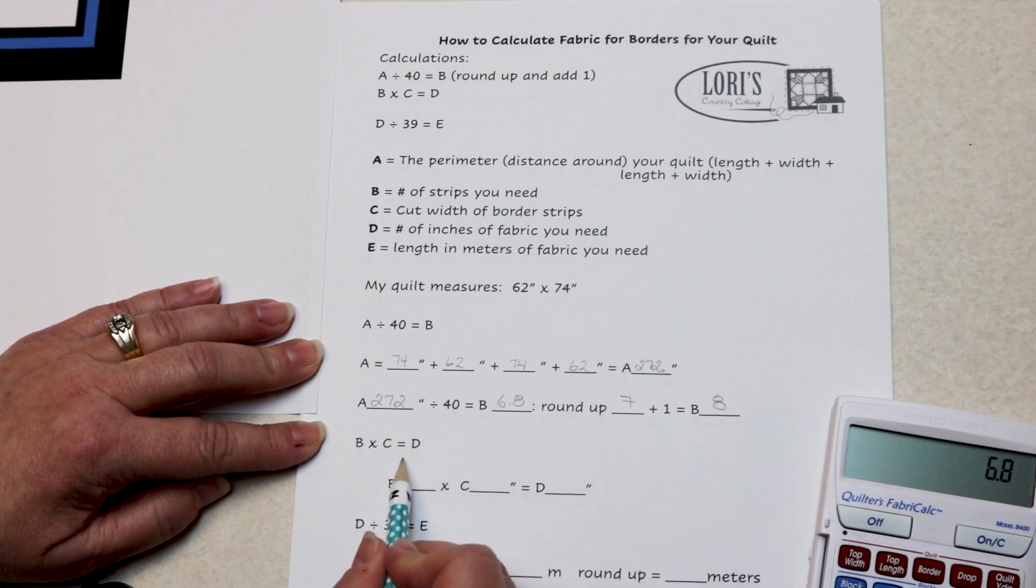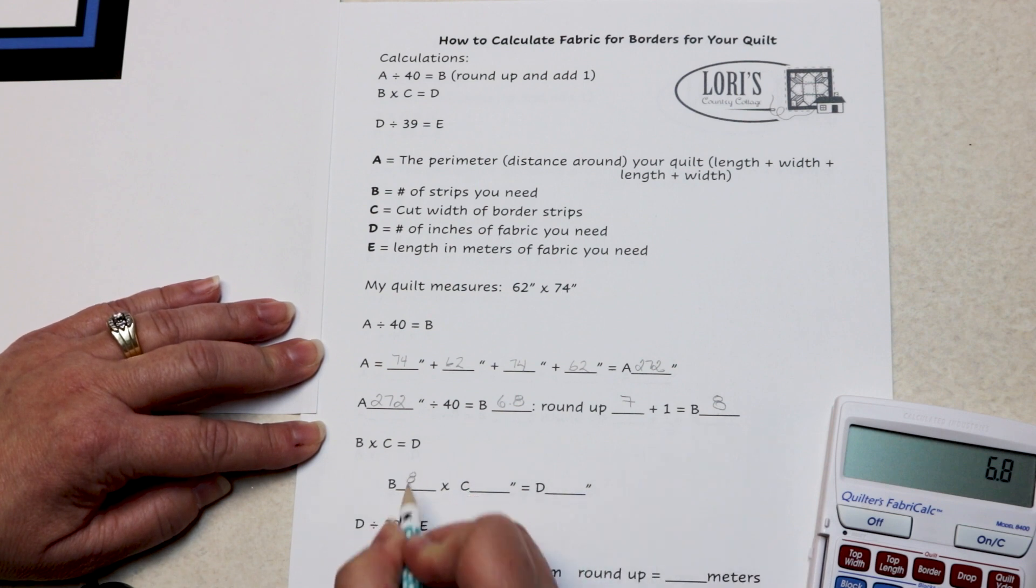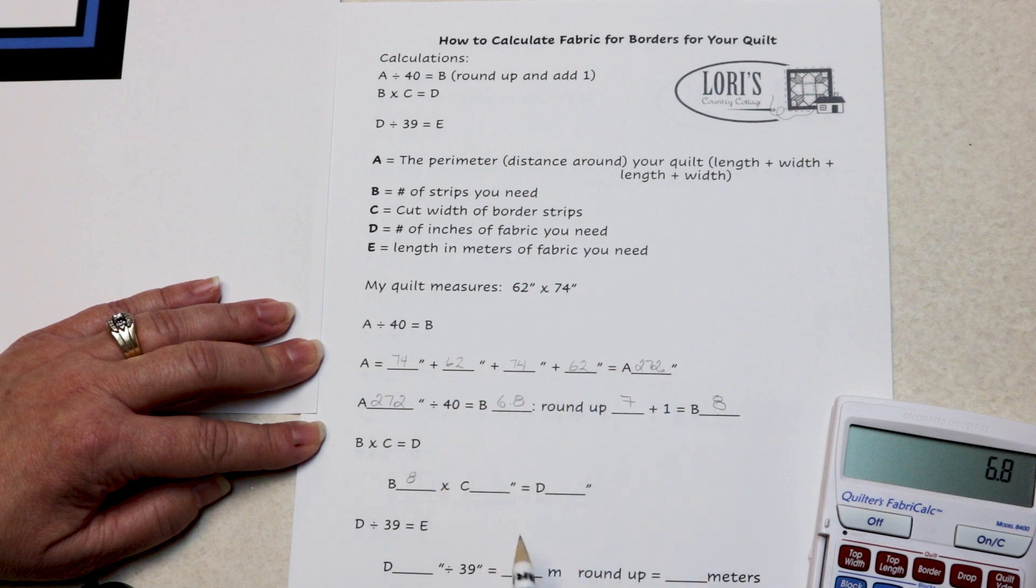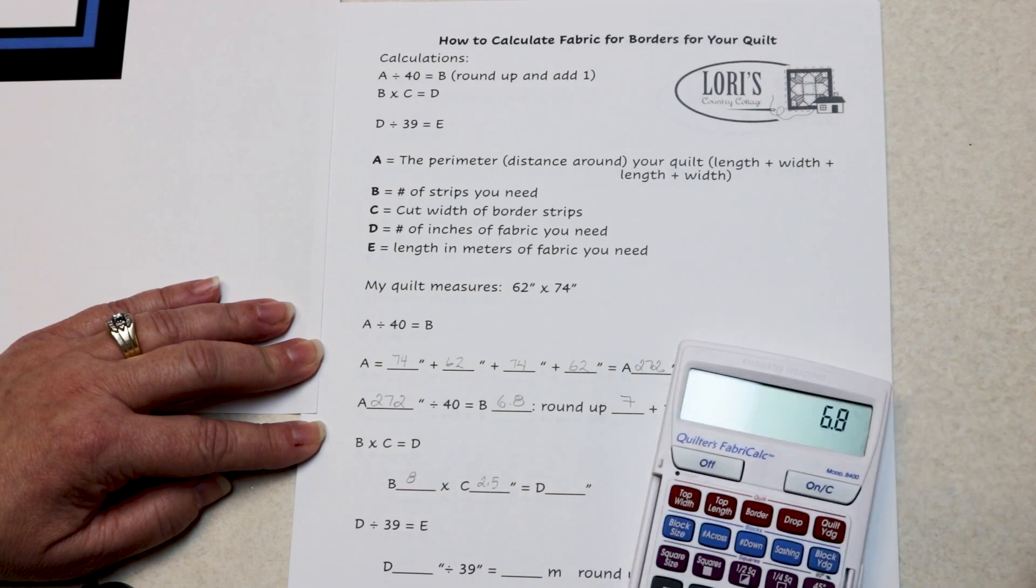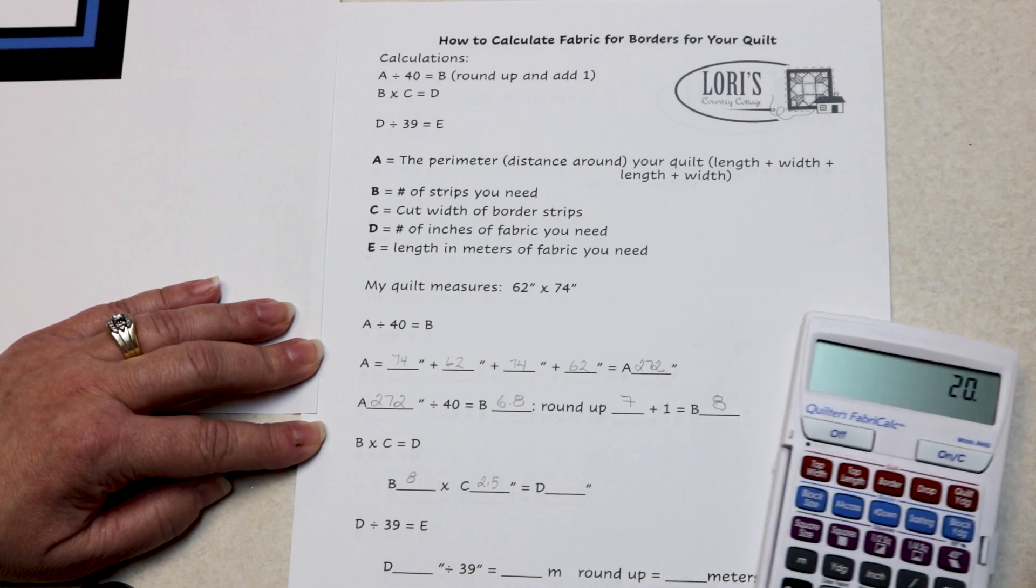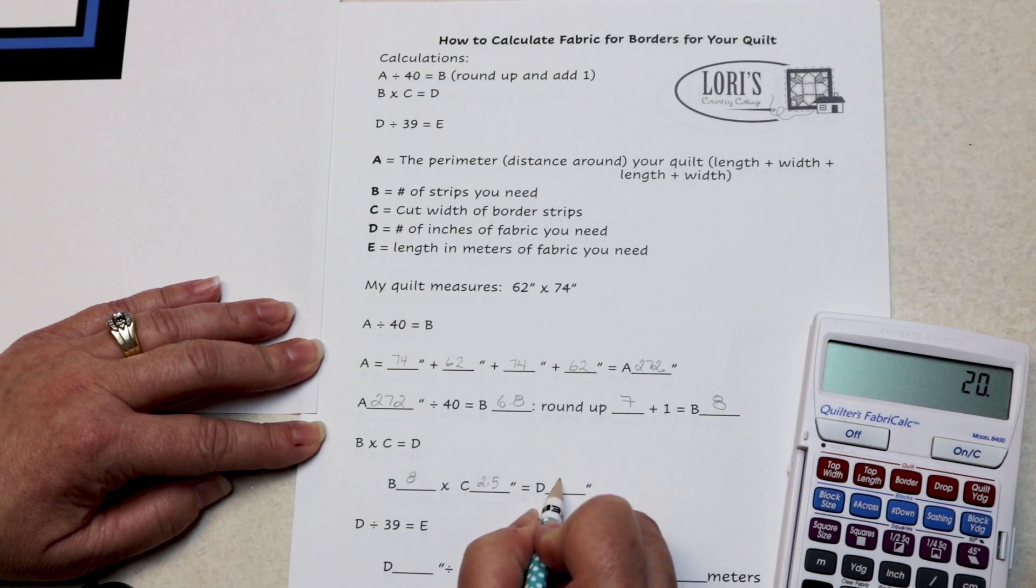Here's our next calculation. The number of strips we have, which is eight, times C, which is the cut width of our border strip. This is our narrow little border, so it's two and a half inches. So eight times two and a half inches tells me how many inches I need. D is the number of inches I need. I need 20 inches.